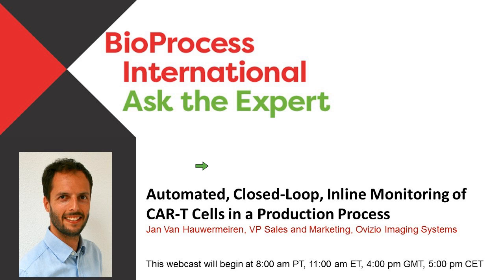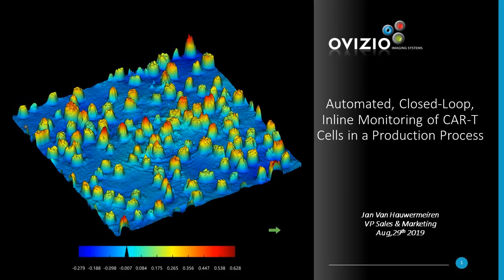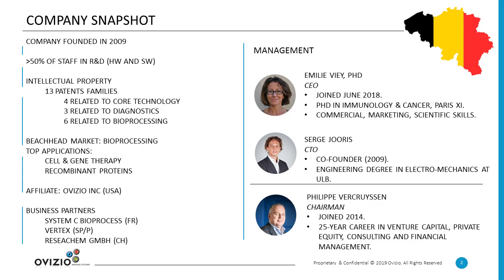Hello, good morning and good afternoon for everyone. Thanks for joining the webinar. Today we will be talking about the automation and monitoring of CAR T cells. Ovisio is a Belgian company reaching its 10th anniversary at the end of this year. We are very much focused on our own R&D — more than 50% of staff is still in R&D, hardware and software, and a lot of the applications are built in-house. Our main market is in bioprocessing, with top applications in cell and gene therapy and in recombinant proteins.